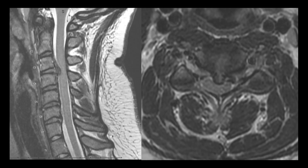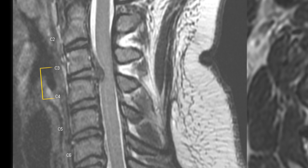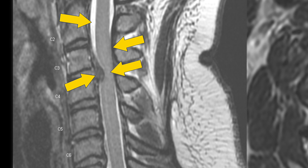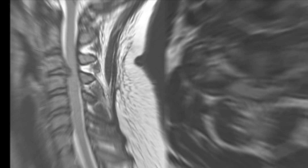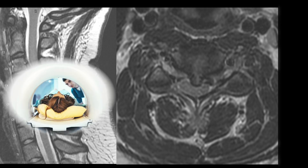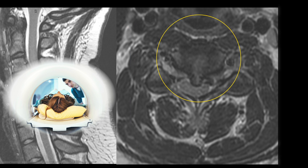We're looking at this area right here, which is C3-C4, where we can see a very large disc herniation. Typically the spinal fluid is lighter; the spinal cord is here. We can clearly see there's no spinal fluid here, and that spinal cord is getting indented. This is a cross-section — imagine the patient is laying down, the back of the neck is here, the front of the face is here. We can clearly see how this football-shaped area, which is typically the disc, has an indentation. There's something coming out here which is pressing on the spinal cord.